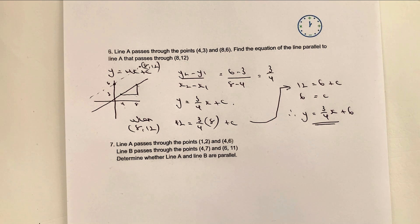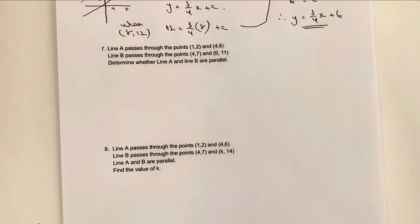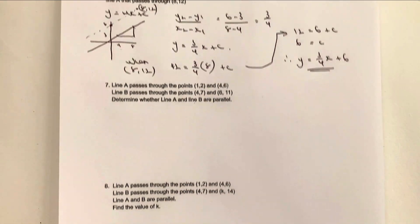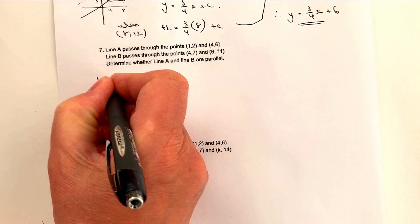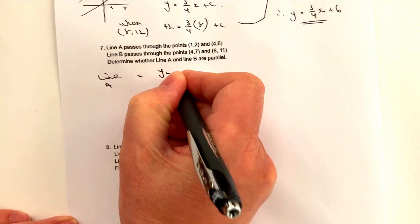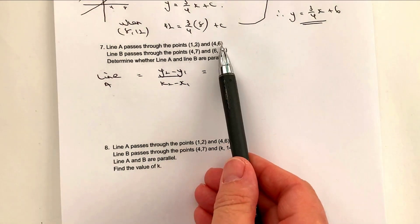There are additional videos on the playlist with very similar questions. Question seven: line A and line B — we need to check whether they are parallel by comparing gradients using y₂ − y₁ over x₂ − x₁. For line A: y₂ = 6, y₁ = 2, x₂ = 4, x₁ = 1, giving (6 − 2) ÷ (4 − 1).